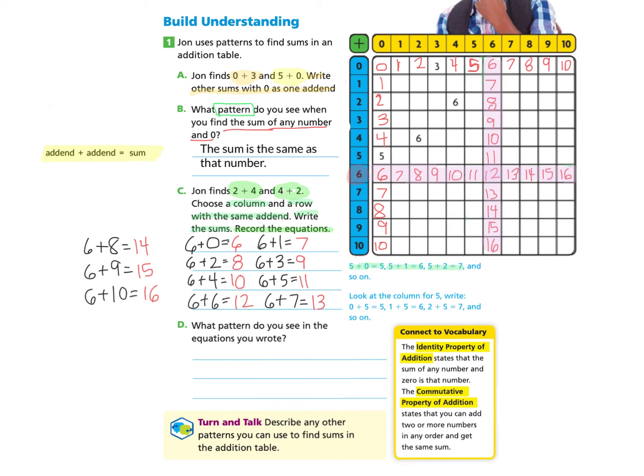Here I have 6 plus 3. And when I make 6 plus 3, I get 9. 6 plus 3 equals 9. Now watch as the order changes. If I make 3 plus 6, I will still get the same sum, which is 9.